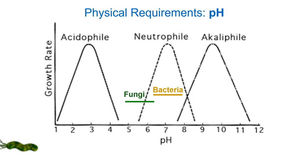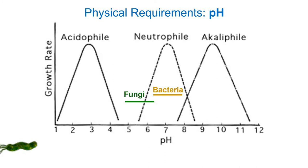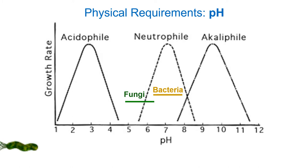Microbes can be especially picky when it comes to pH. We have neutrophiles that love near-neutral conditions — the majority of bacteria fit this category. We have acidophiles that like a lower pH, and alkalophiles that prefer a higher pH. Fungi, for the most part, tend to like their environment to be a bit more acidic than bacteria.